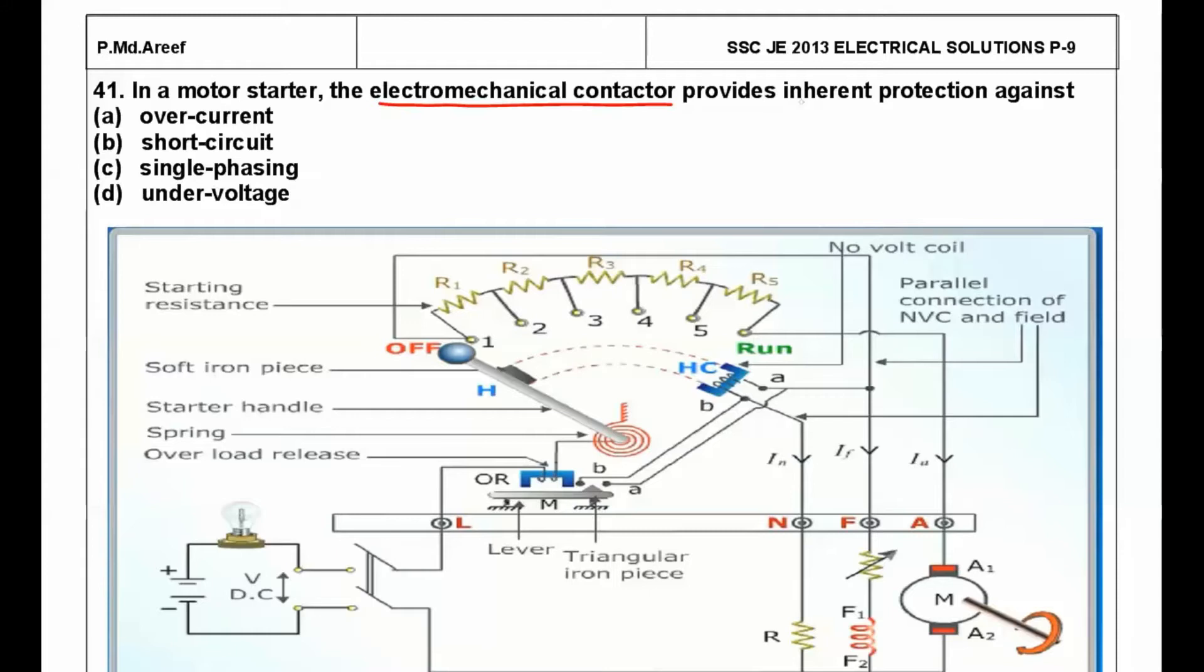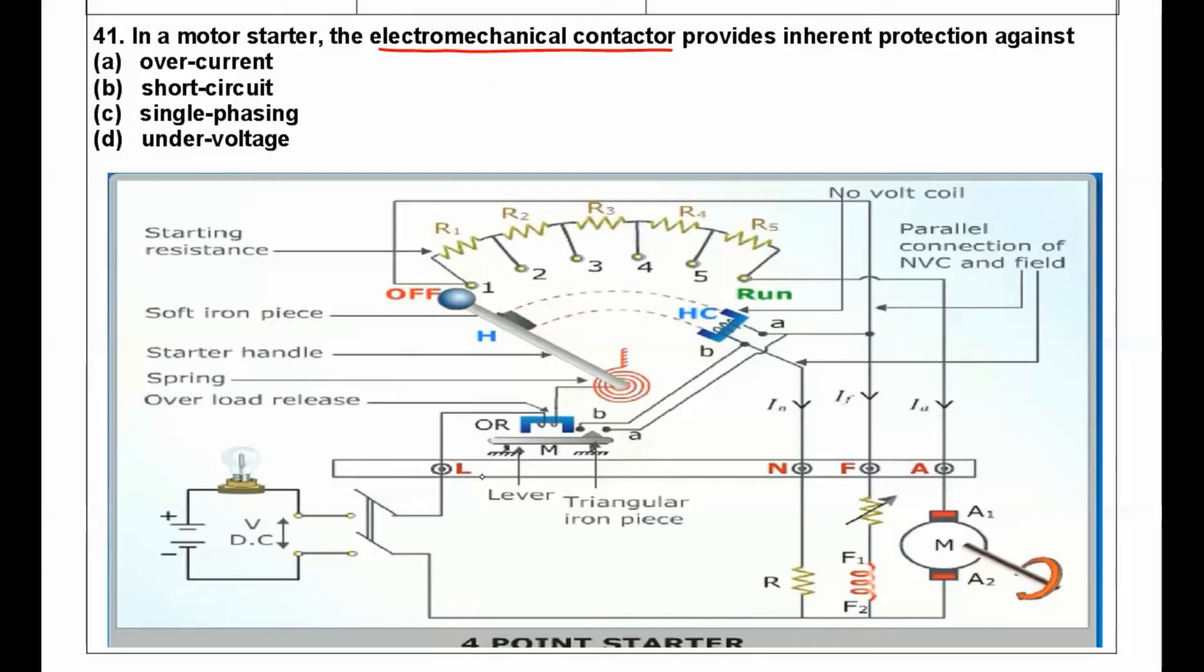As you can see here, it's a four-point starter and this is an electromechanical contactor. Here we have a holding coil, so whenever the voltage is below the rated voltage, the holding coil releases this contactor spindle or moving contact.